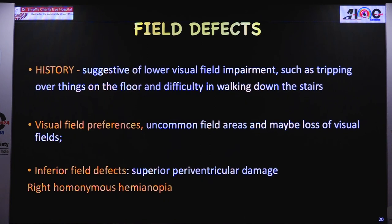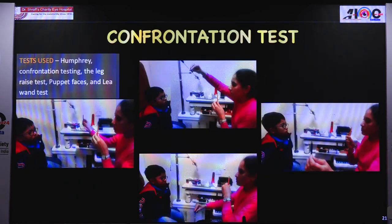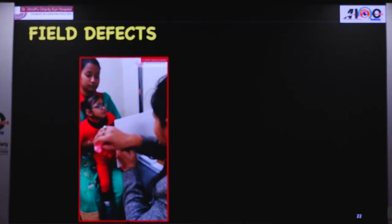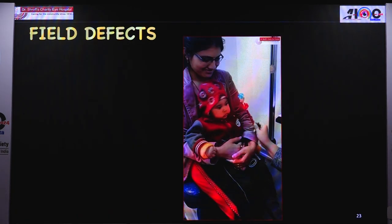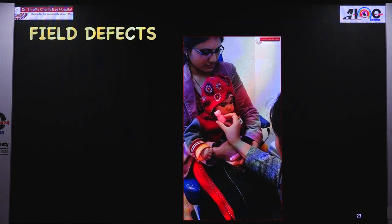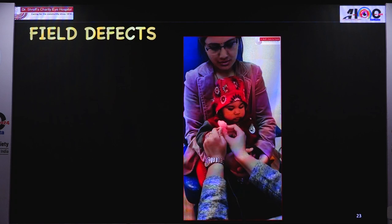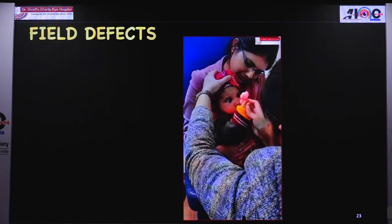Regarding field effects, children have lower visual field impairment, tripping over things on the floor and difficulty walking downstairs. Visual field preferences are present — inferior field effects mainly because of superior periventricular damage — and some have right homonymous hemianopia. For assessment, older children can do Humphrey perimetry; confrontation testing can be done in younger children. A puppet face or small toy with a cardboard partition can be used binocularly to observe where the child fixates as the toy is moved, watching for the preferred gaze direction.